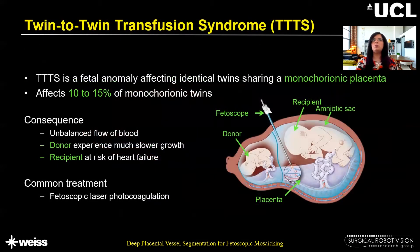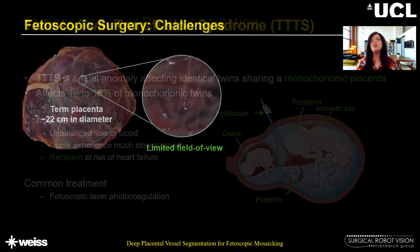Twin-to-twin transfusion syndrome is a fetal anomaly affecting identical twins sharing a monochorionic placenta. In this syndrome, the flow of blood between the two fetuses becomes uneven. As a result, the donor experiences much slower growth while the recipient is at a risk of heart failure due to the excess of blood it is taking. Fetoscopic laser photocoagulation is used for treating this condition.